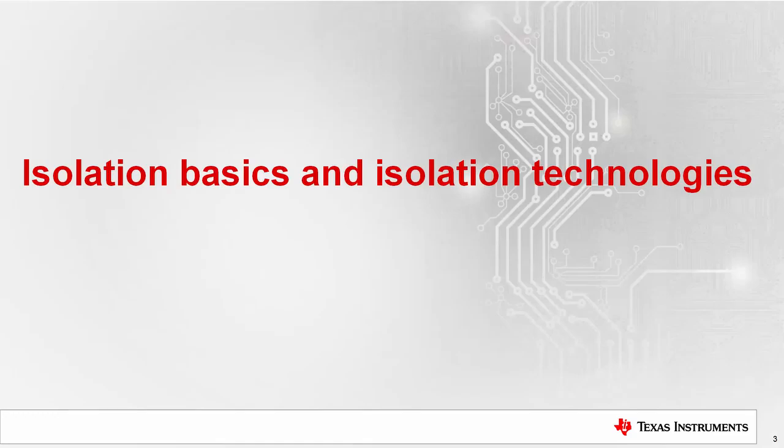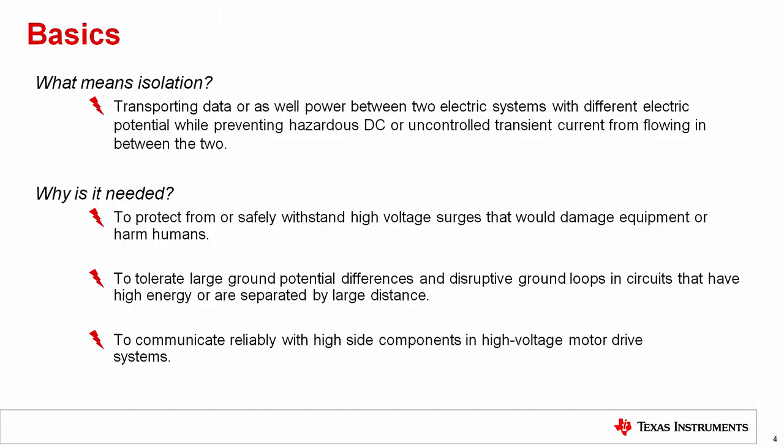Isolation basics and isolation technologies. What does isolation really mean? In general, isolation means transporting data or power between two electric systems with different electric potential. The reason to isolate is to prevent DC or uncontrolled transient currents from flowing between the two. Isolation is needed to protect from or safely withstand high voltages that would damage equipment or harm humans, to tolerate large ground potential differences and disruptive ground loops, and to communicate reliably with high-side components in high voltage motor drive systems like those in industrial robots.